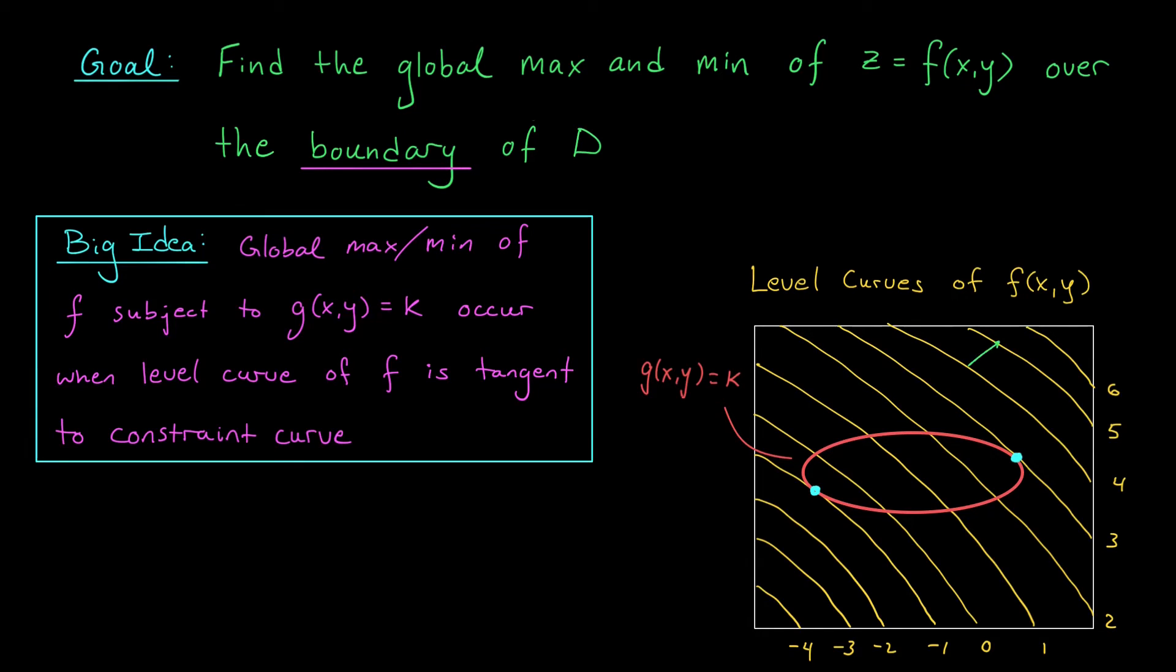We also know that the gradient vectors are orthogonal to the level curves. So I'm just going to go ahead and plot a whole bunch of gradient vectors here for my function f(x,y). The gradients are perpendicular to the level curves, and they're always going to sort of point in the upper right direction, in the direction of steepest ascent. Okay, so these are the gradients for f(x,y).